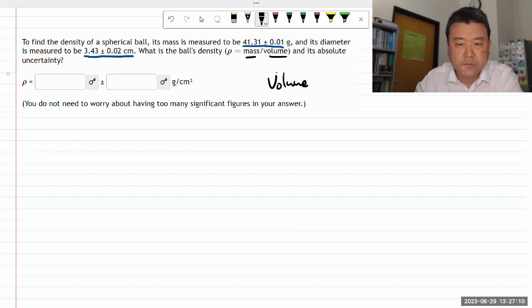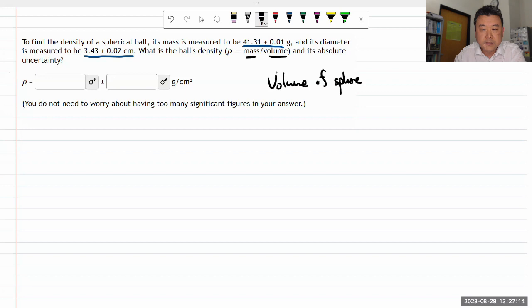I happen to have the formula for volume of a sphere memorized: it's 4/3 π r³. The question gives parameters as a diameter, so let me rewrite this in terms of diameter.